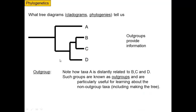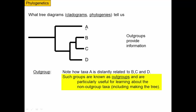Going back to what these tree diagrams tell us: B, C, and D are more closely related and A is outside of them — B, C, and D form a monophyletic group, and A is a sister group. We can consider A to be an outgroup — it's outside the group we're interested in. Outgroups are really useful for learning about the ingroups, particularly when making a tree. If we're trying to understand the evolution of B, C, and D, A as the outgroup can give us useful information about the ancestor of B, C, and D, and help us understand the traits of those taxa by knowing what the ancestor looked like.